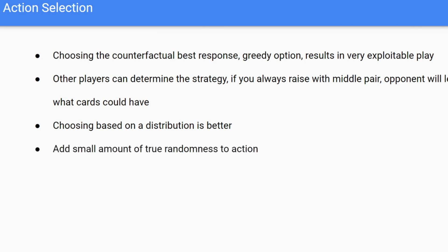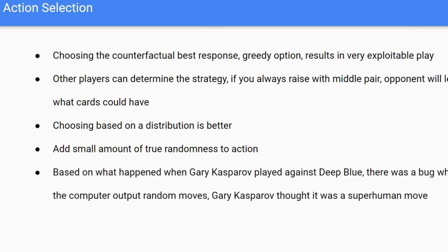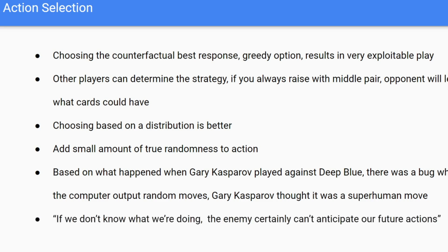You can also add a small amount of true randomness to your actions. In game theory, this is actually based on Garry Kasparov versus Deep Blue in the 90s — there was a bug in the program that output random moves, and it ended up screwing up Kasparov, and he ended up losing the game. The intuition behind this is a quote from World War II: 'If we don't know what we're doing, the enemy certainly can't anticipate our future actions.' But not too much true randomness.